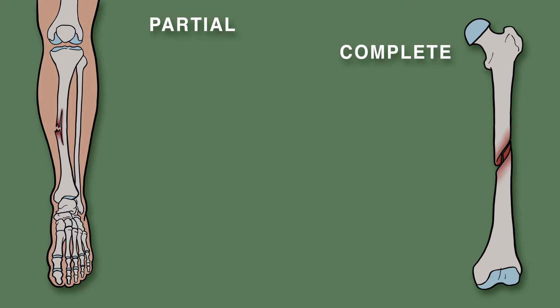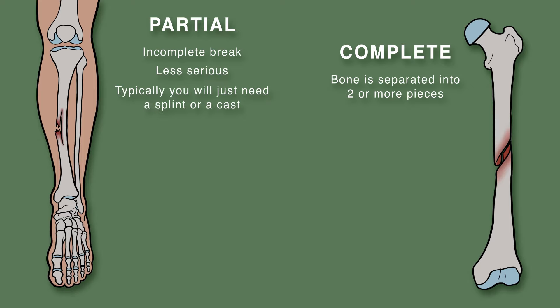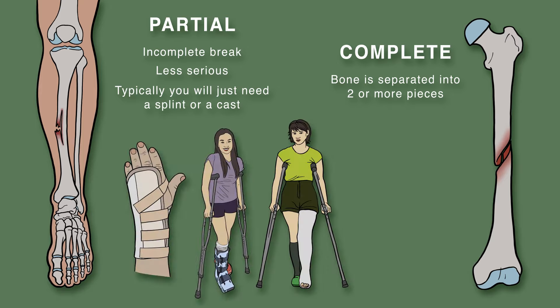Fractures can also be partial or complete. A partial fracture is an incomplete break, while a complete fracture means the bone is separated into two or more pieces. Partial fractures are less serious, and typically you will just need a splint or cast.